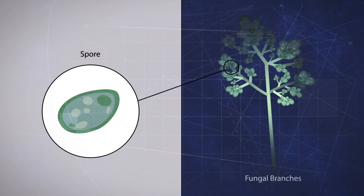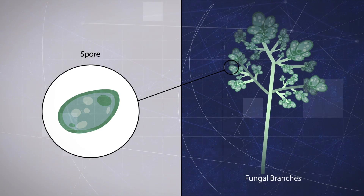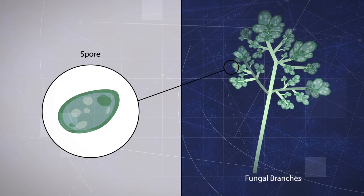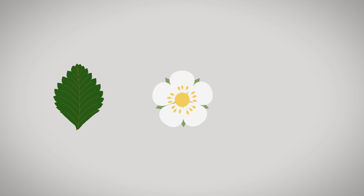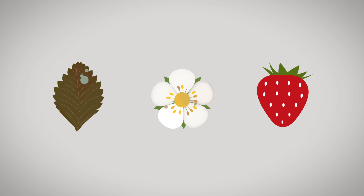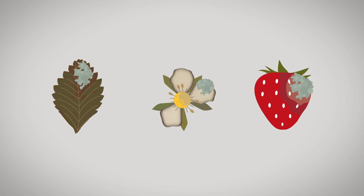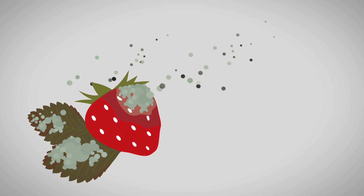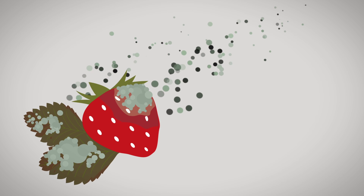Botrytis reproduces through huge numbers of microscopic spores that form on minute tree-like structures. The spores are produced on leaves, flowers, and berries that have been attacked and killed by botrytis. When mature, the spores are easily dislodged and carried on air currents.